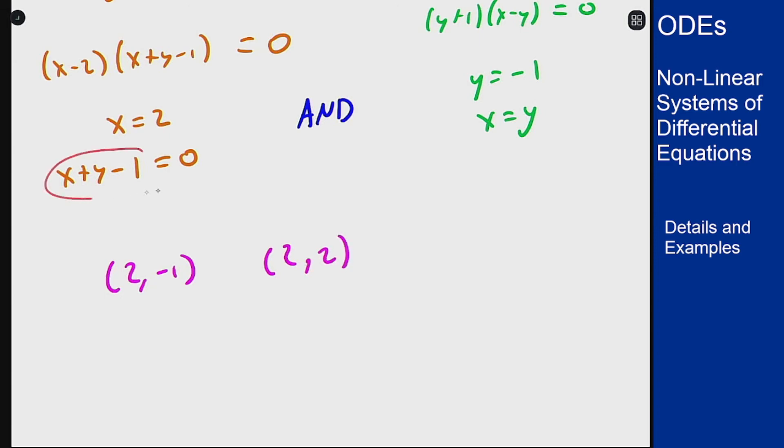We could pick x plus y minus 1 equals zero and y equals minus 1. That would give me the point minus 1 for y and in terms of x if I plug minus 1 into here I will see that I get x minus 1 minus 1 equals zero or x equals 2.